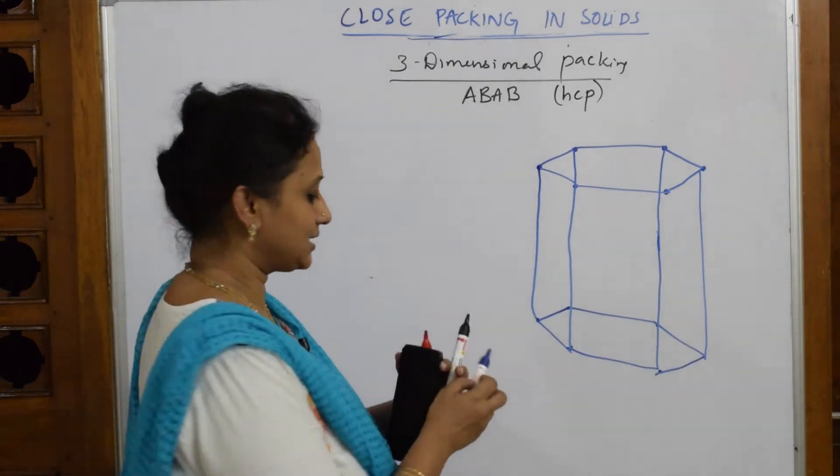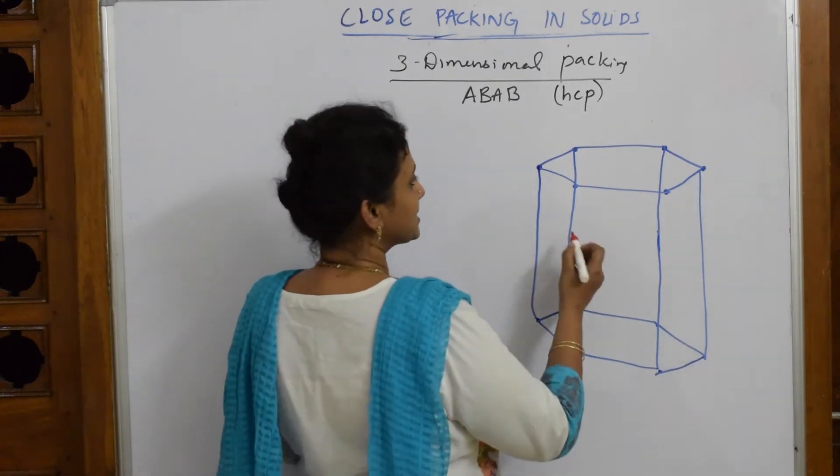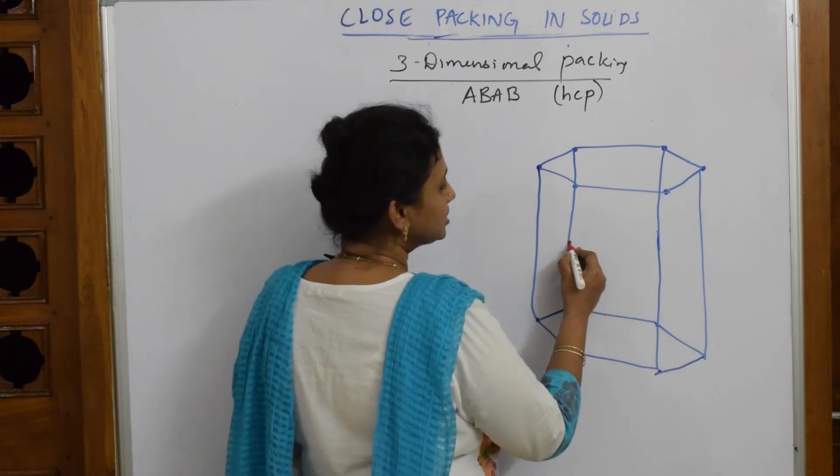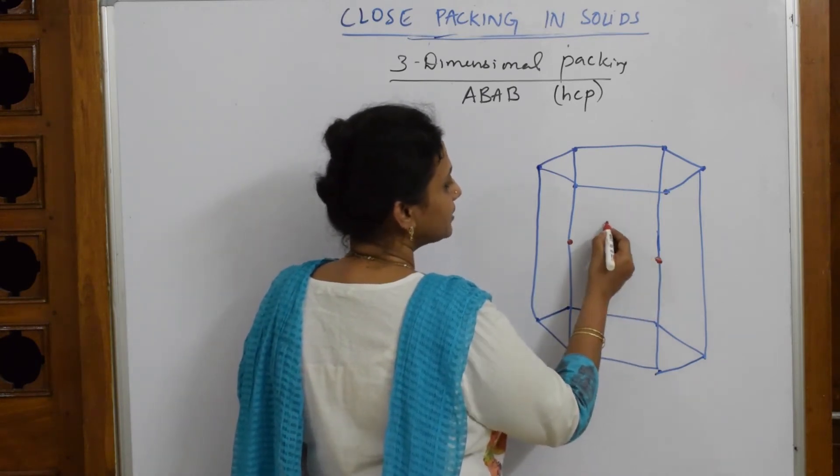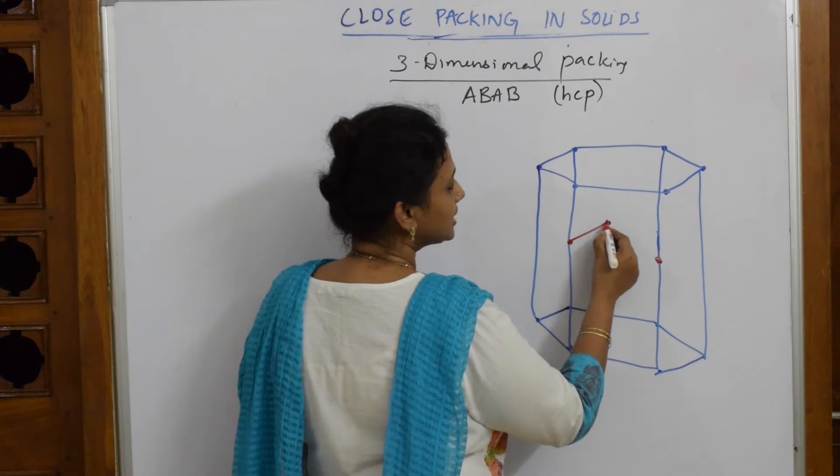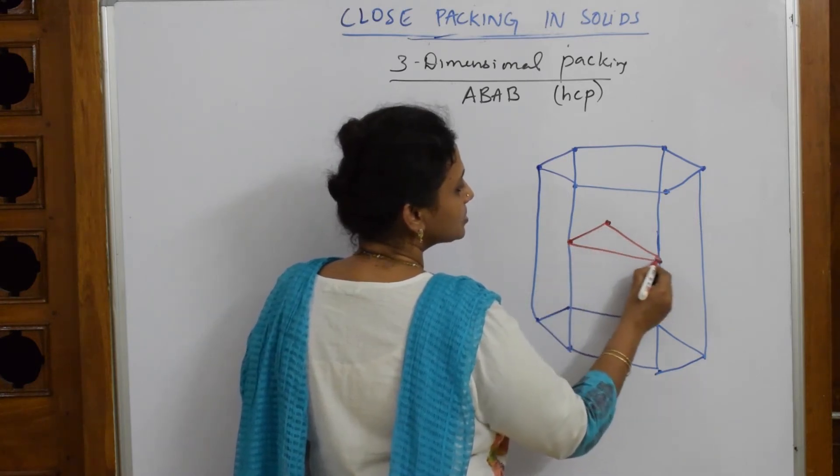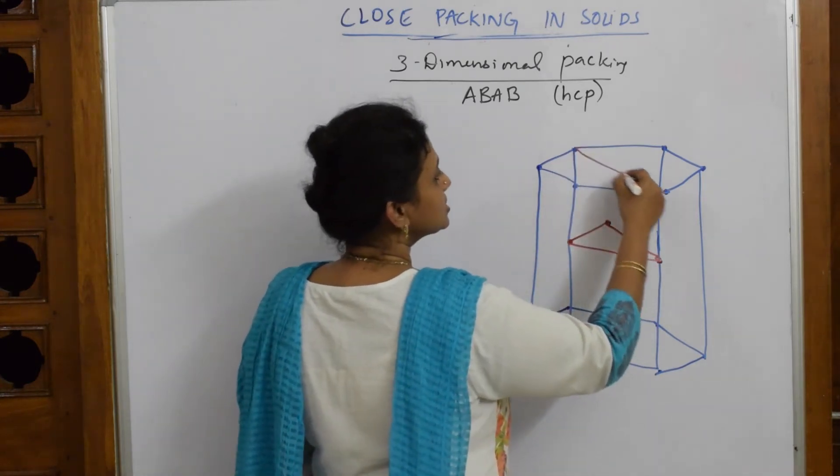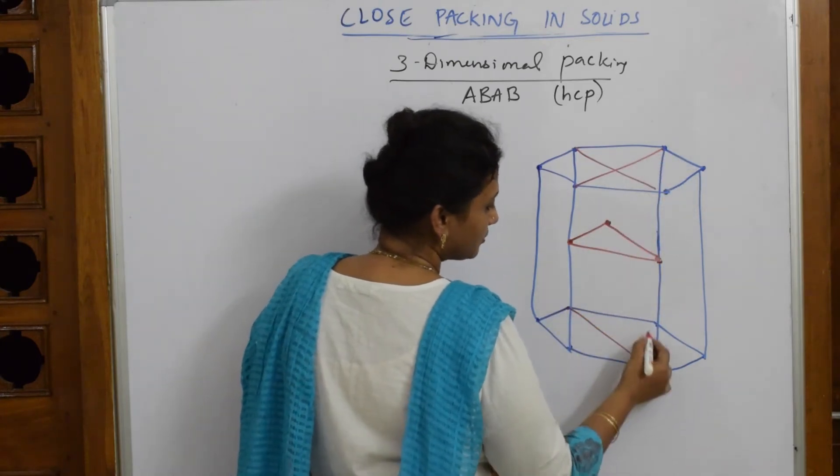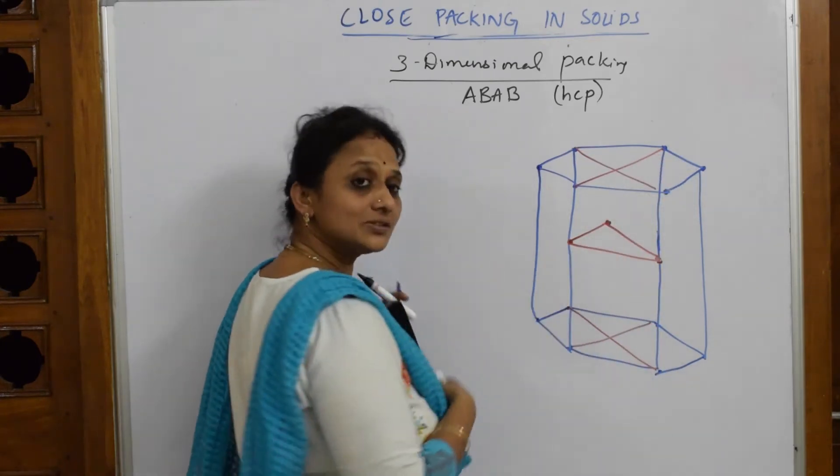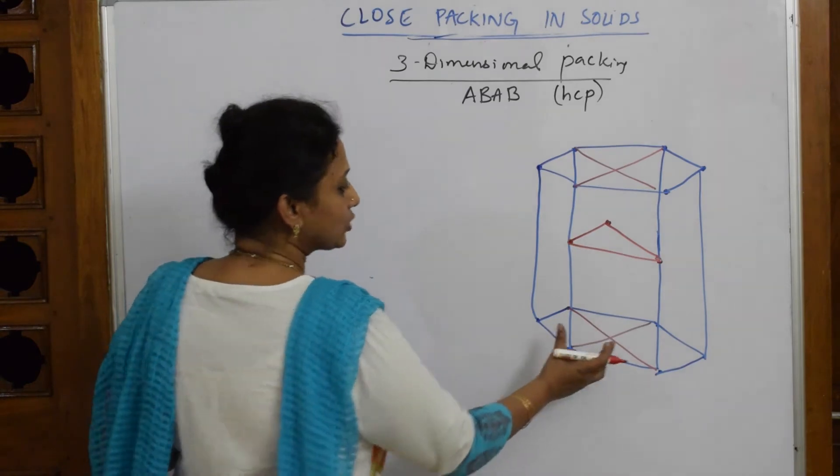This looks like a hexagon, and in between the hexagon, in the center, you also have three atoms. This atom is joined like this, this is joined, and this is also joined. This is your roof, this is your floor, and this is your center atom.